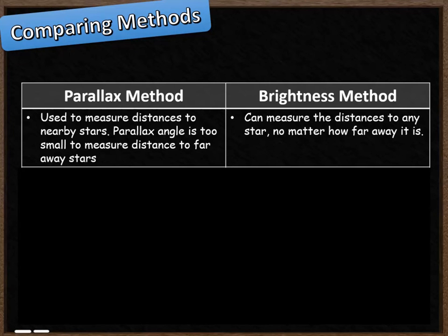We're now going to make a quick comparison between those two different methods. The parallax method is able to measure the distances to nearby stars only. The angle is too small to be able to measure the distance to far away stars. However, the brightness method can measure distances to any star, no matter how far it is away.